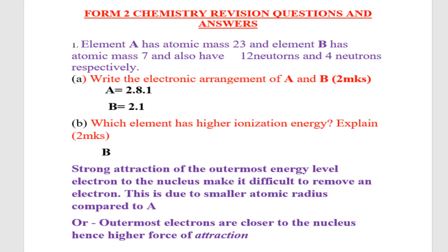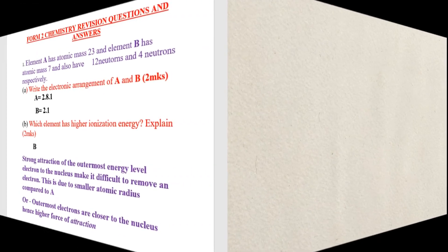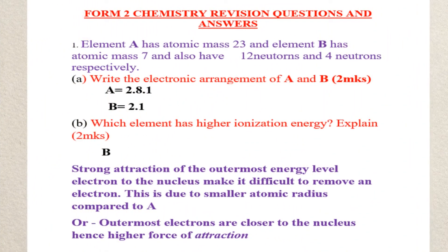Element A has 2 electrons in the first energy level, 8 electrons in the second energy level, and 1 electron at the outermost energy level. Element B has 2 electrons at the first energy level and 1 electron at the last energy level.